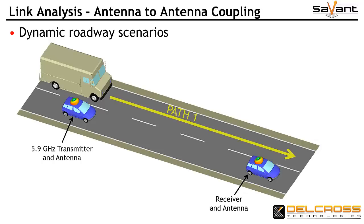In the first example, the delivery van will follow Path 1, pulling alongside and passing both sedans. The sedans in this case are separated by 19 meters.